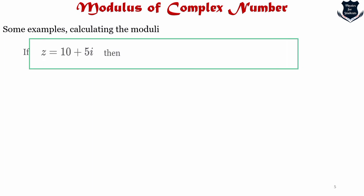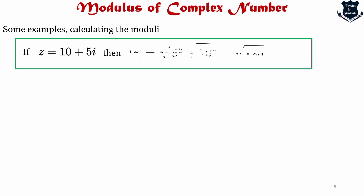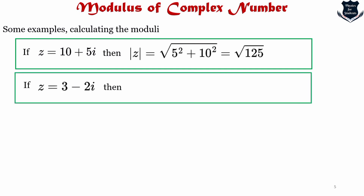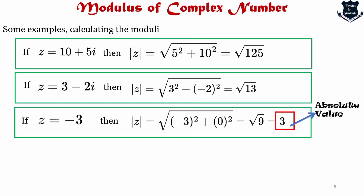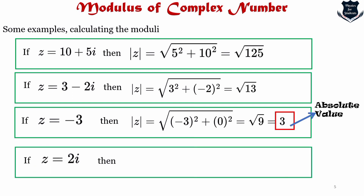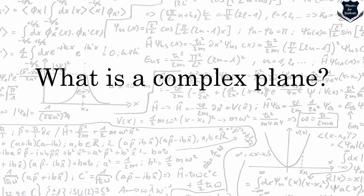Here are some quick examples to calculate the modulus. If z equals 5 plus 10i, we apply the formula directly. If z equals 3 minus 2i, we get the square root of 13. If z equals minus 3, we get the square root of 9, which is 3 — that value marked in red is called the absolute value. And if z equals 2i, the modulus equals 2, also a kind of absolute value.